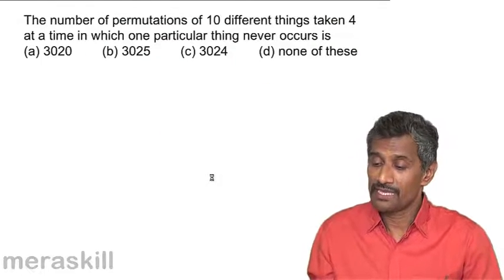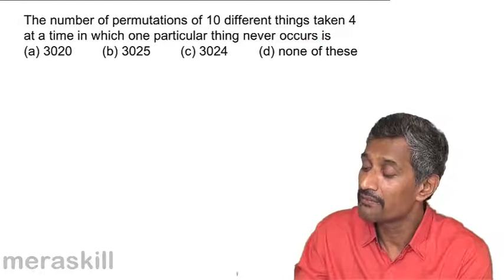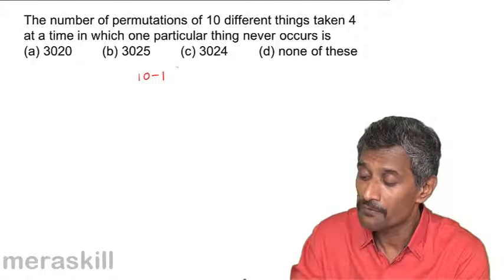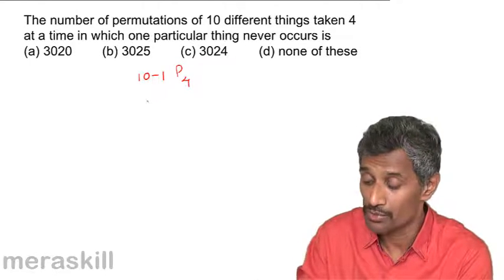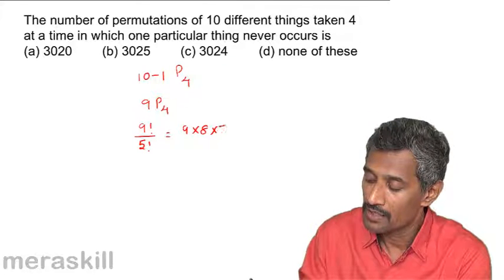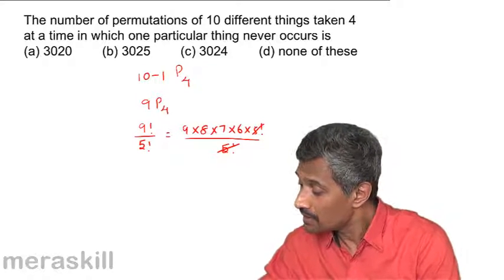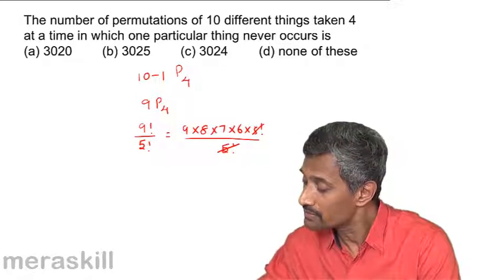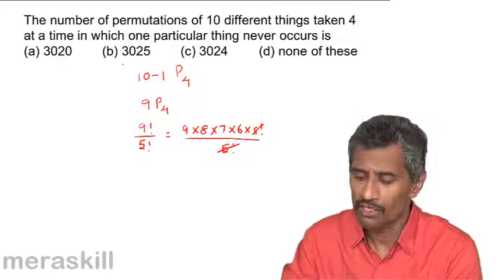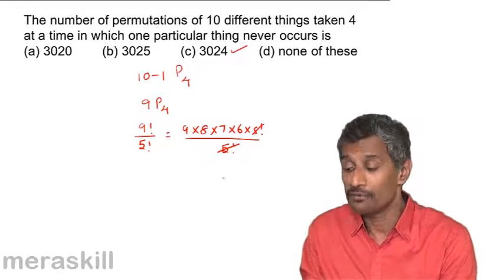For example: find the number of permutations of 10 different things taken four at a time in which one particular thing never occurs. Since one particular thing never occurs, the total number of available options is 10 minus 1, which is 9. Out of these, you pick 4, so it is 9P4. This equals 9 factorial upon 5 factorial, which is 9 × 8 × 7 × 6 = 3024. The simple logic is that one item is excluded, so only 9 are available to choose from.